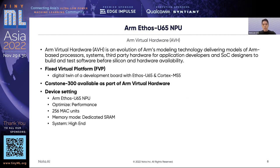In order to study these problems, we worked on a virtual environment called ARM Virtual Hardware for the ARM Ethos U65 MPU. ARM Virtual Hardware is an evolution of ARM's modeling technology. It delivers models of ARM-based processors, systems, and third-party hardware for application developers and SOC designers so they can build and test software before silicon and hardware availability. We worked on a fixed virtual platform, which is a digital twin of the board with Ethos U65 and Cortex-M55. For the device configuration, main units were selected as 256 and the memory mode was selected as dedicated SRAM.